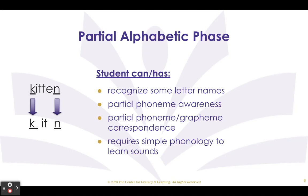A child is usually in the partial alphabetic phase during kindergarten and first grade. However, older struggling readers may be stuck in this phase. In order to transition a child into the next phase, systematic phonics instruction is critical. According to Dr. Ehri, systematic phonics instruction reduces the time a child is in the partial alphabetic phase.